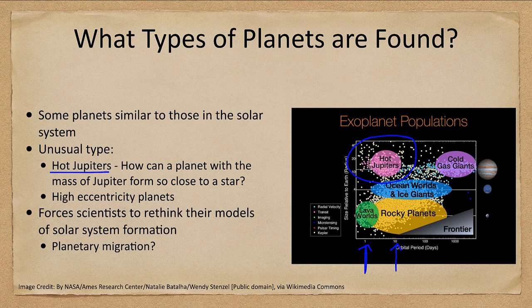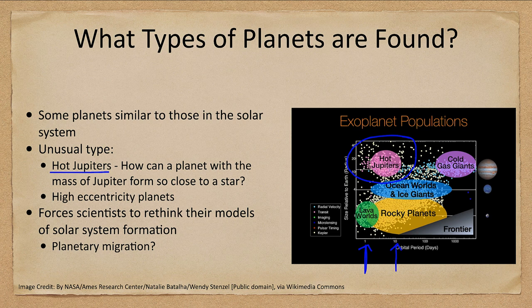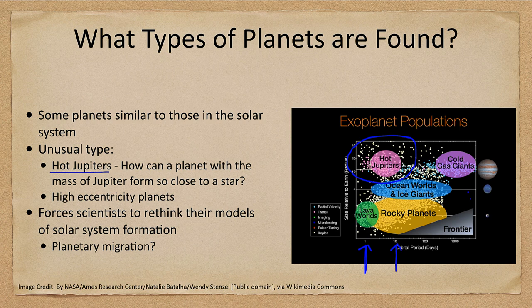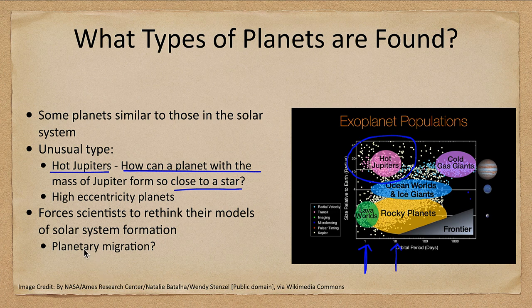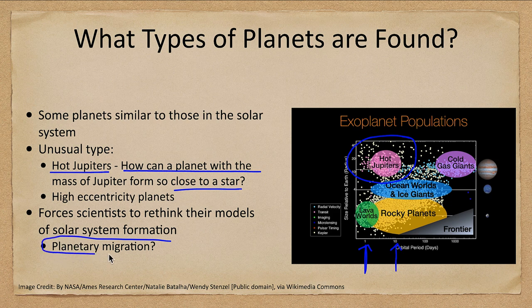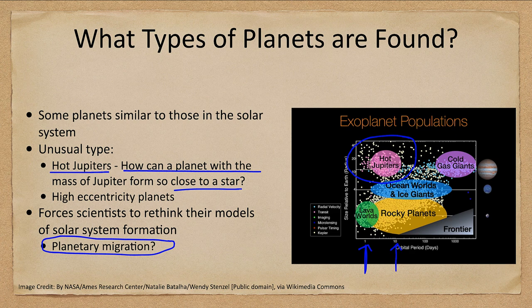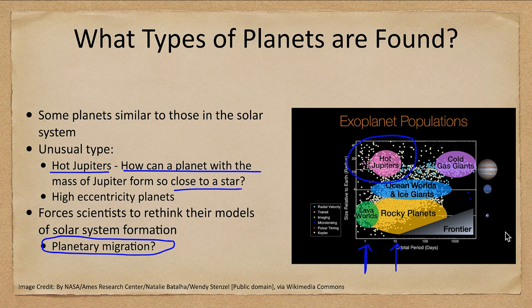To be fair, these are the easiest ones to detect. They're large and they're close to the star. So we may be finding the exceptions here, the unusual ones, but still the fact that they even exist leads us to question how can such a planet form so close to a star. That leads us to rethinking how solar systems form. We mentioned planetary migration previously, but maybe these planets formed elsewhere and migrated in much closer to their stars.